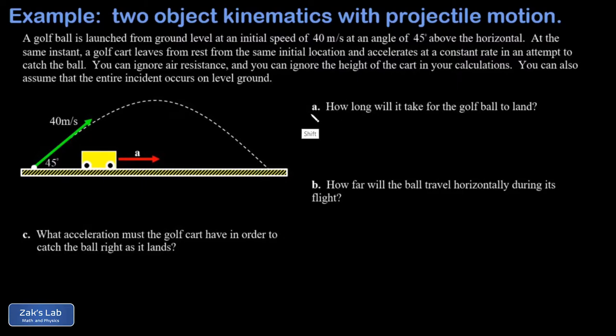So the whole strategy for the problem is we'll solve the projectile motion problem first. We're going to find out how long the golf ball is in the air and how far it goes, and then in part C we're going to compute the required acceleration of this golf cart so it can catch the golf ball.